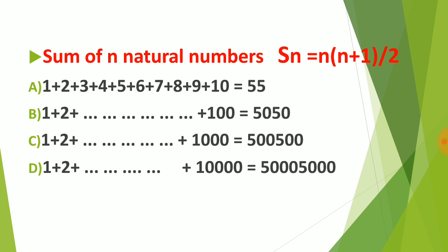If we add the first 10 natural numbers we get 55; first 100 gives 5050; first 1000 gives 500,500; and first 10,000 gives 50,005,000. There is a pattern — up to 10 there is 55, up to 100 two zeros, up to 1000 four zeros, up to 10,000 six zeros. Try to remember these final values because in your examination you won't have sufficient time to calculate them.